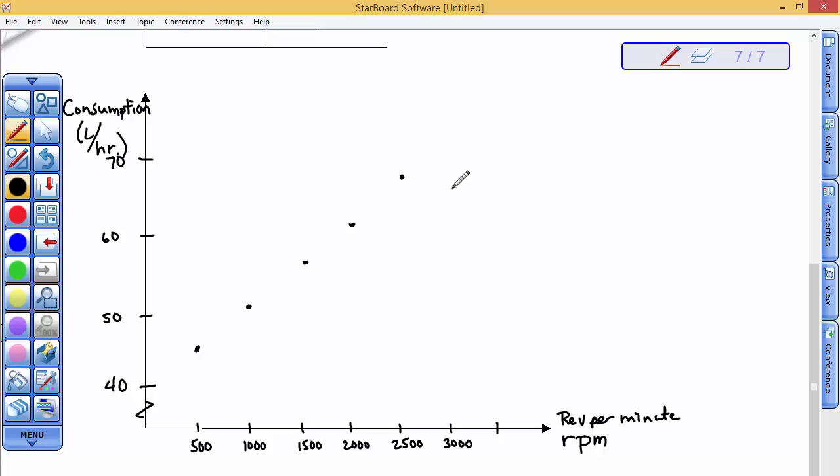And you can see the linearness of this representation of this data. I'm trying to draw a straight line through those dots. I did okay. They asked me to graph it from 500 to 3,000. I should not extend, I should not assume that it can go however far beyond 3,000 RPMs. I cannot make that assumption. So I'm going to stop there with no arrowheads.